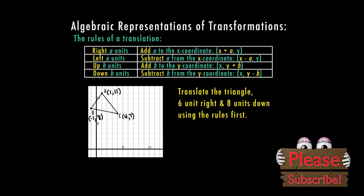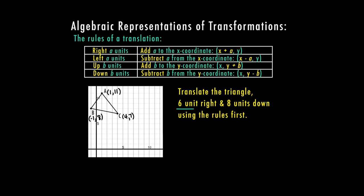This one tells me to translate the triangle six units to the right and eight units down. For point A, my x is 1 and I'm going to add six — right means I add that value to the x coordinate. My y is 11, and moving eight units down means I subtract eight from the y value.